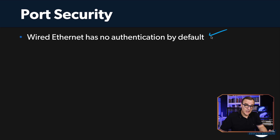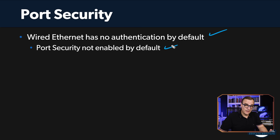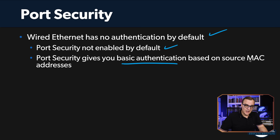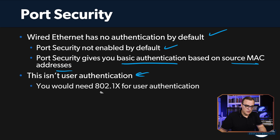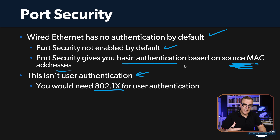I'm going to show you how to set up port security to stop rogue devices from accessing a network. Note that Ethernet does not have any security by default, and port security is not enabled by default — you have to configure it. Port security gives you basic authentication based on source MAC addresses. The switch looks at frames received, checks the source MAC address, and determines if the device is allowed. This is not user authentication — you need 802.1x for user authentication. Port security is a basic but useful layer of security using multiple mechanisms to improve network security.